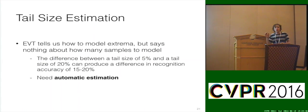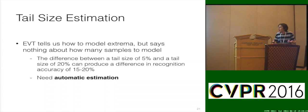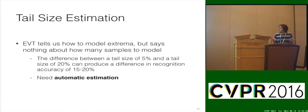Terry mentioned a big open question in EVT modeling is: what is the tail size? You're always fitting to extrema, but they don't tell you how to identify those extrema. In many cases when doing EVT modeling, you just guess — something like the tail is less than 50% of the data — and then tune it like a hyperparameter on a validation set. A better automatic way is an open question. EVT tells us how to model extrema but says nothing about how many samples to use. A difference between a tail size of 5% and 20% can produce a difference in recognition accuracy of 15% to 20% — so if you're messing up tail estimation, you could have a degenerate model.